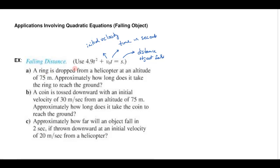So the first part of this problem says a ring is dropped from a helicopter at an altitude of 75 meters. So in this case it tells me that, that tells me a distance. And the question is approximately how long does it take to reach the ground? So when it says how long, when the question is how long does it take to reach the ground then that's saying find time. So this means find T, and that means if I have T I'm going to have to know what my initial velocity is and what my distance is.